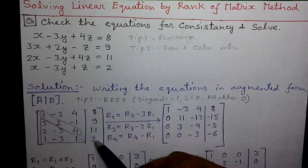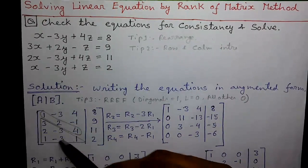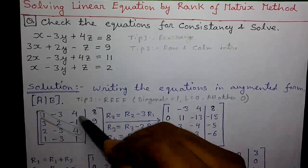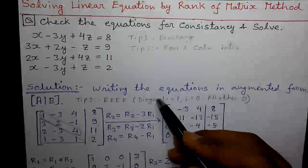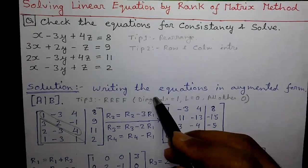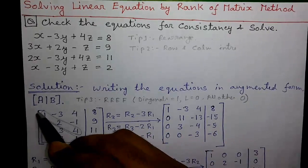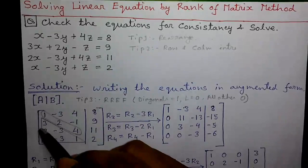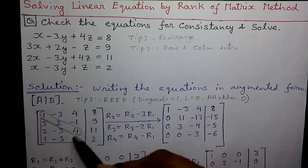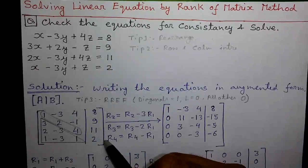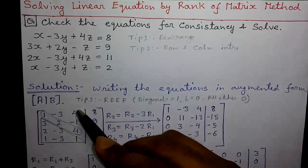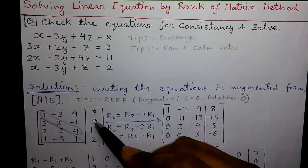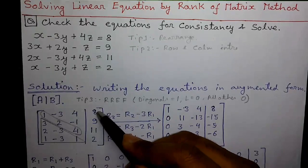The bracket symbol denotes a matrix, and if two vertical bars are there, that denotes a determinant. This is called row 1, row 2, row 3 (R3), and row 4 (R4). Now we will do elementary matrix operations on this matrix to get the reduced row echelon form.